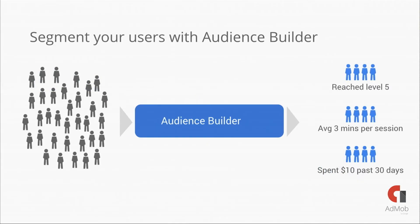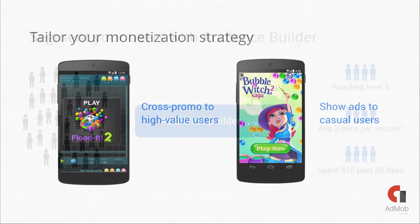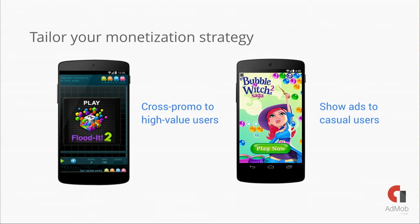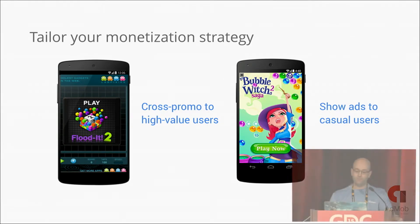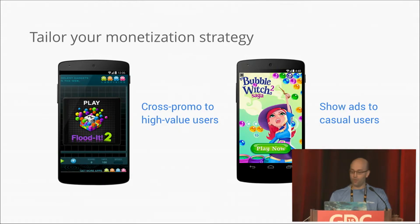Audience Builder is another key feature we have rolled out since GDC last year. Google Analytics is a powerful way to build user lists based on segmentation, and with Audience Builder you can use these lists in AdMob. This means you can tailor your monetization strategy — for instance, cross-promote your other games to spenders and high-value users, while you monetize your casual users with paid ads.